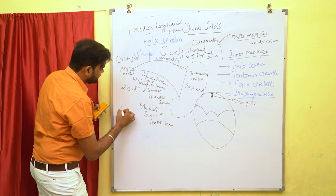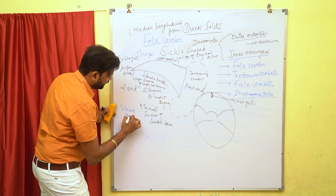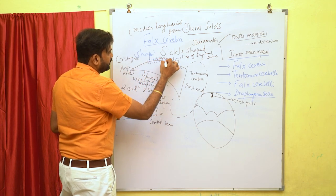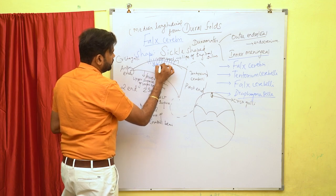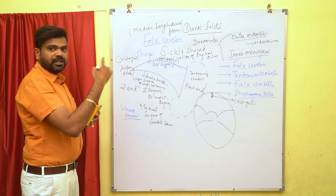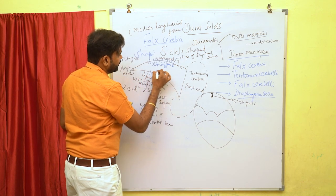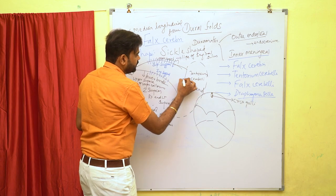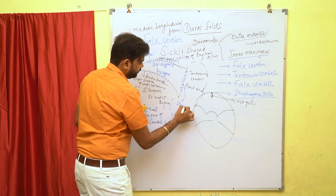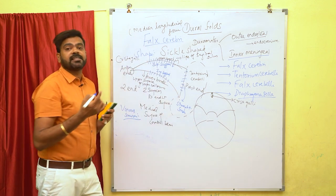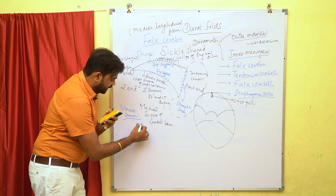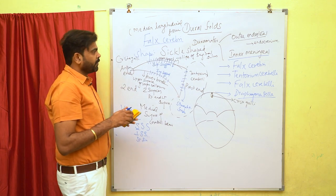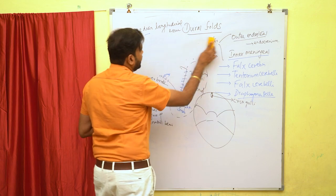The venous sinuses related to the falx cerebri are: along the upper border we can see the superior sagittal sinus; along the lower border we can see the inferior sagittal sinus; and along the attached margin we can see the straight sinus. So there are three sinuses related to the falx cerebri.